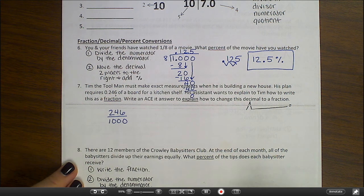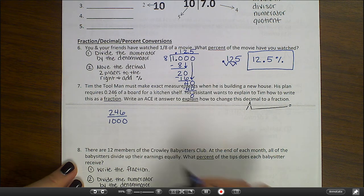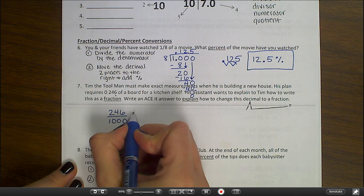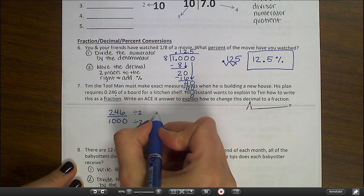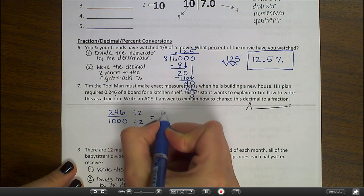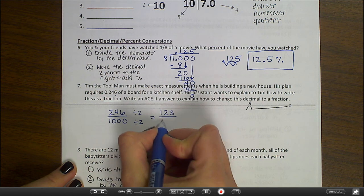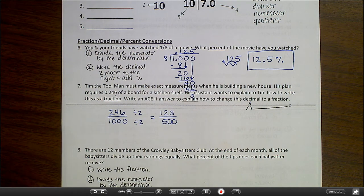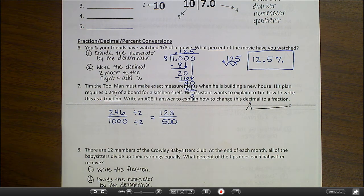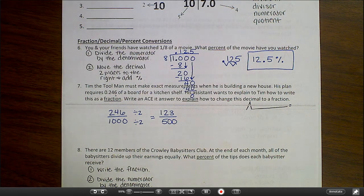Two hundred forty-six thousandths. And then I would simplify it. I would figure out what I can divide by on the top and the bottom to simplify the fraction, so that I know I can divide this by two and one thousand by two. So I'm going to end up with one hundred twenty-three over five hundred. And I cannot continue simplifying, so that would be my answer. So you would just need to be able to explain how to work this problem, not actually work it out yourself.